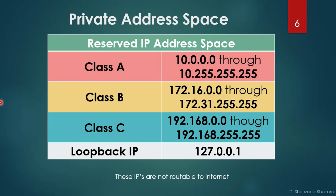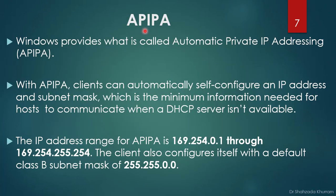One last thing: Windows provides what is called Automatic Private IP Addressing, or APIPA. With APIPA, clients can automatically self-configure an IP address and subnet mask — the minimum information needed for a host to communicate — when a DHCP server is not available. The IP address range for APIPA is 169.254.0.1 through 169.254.255.254. The client also configures itself with the default Class B subnet mask of 255.255.0.0. This happens when you are not connected to a network and have no manual IP or DHCP assignment.